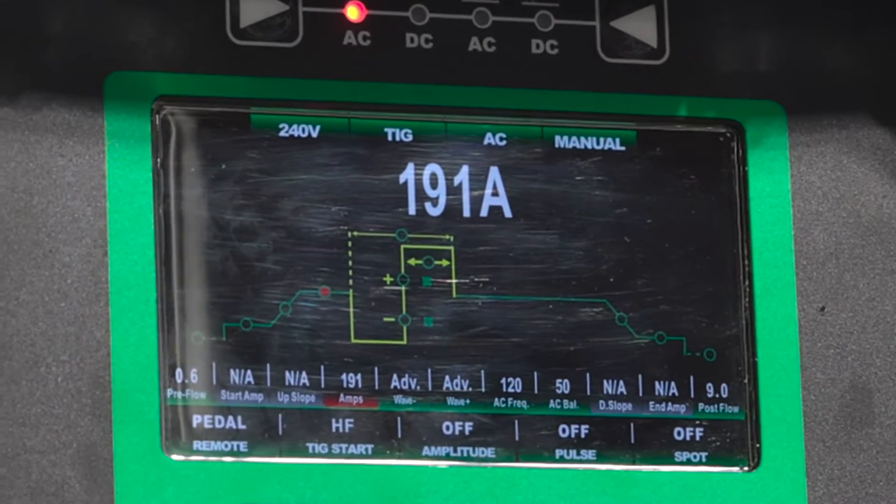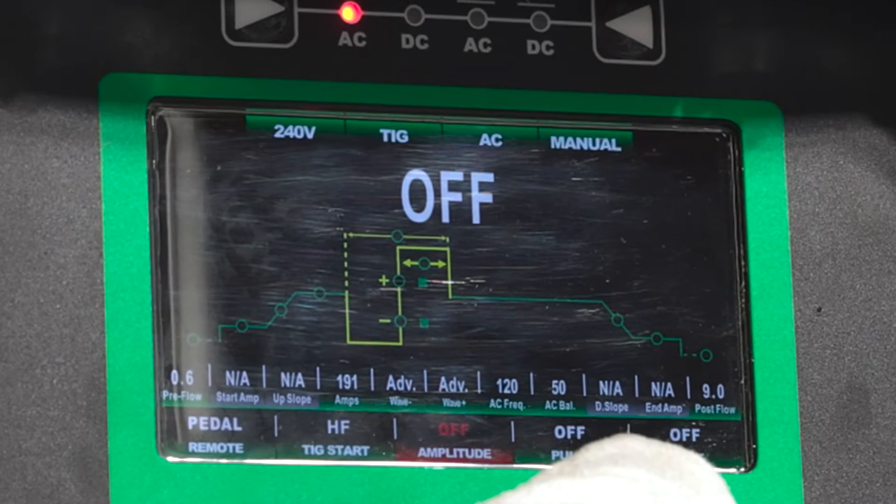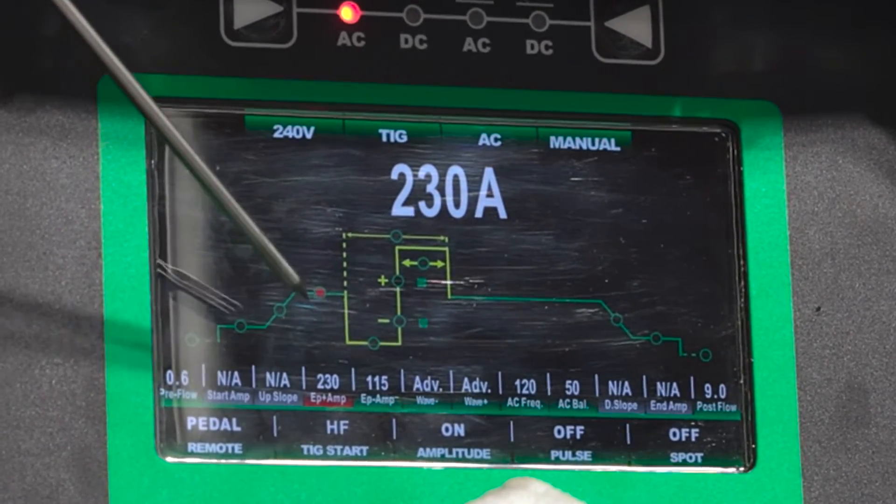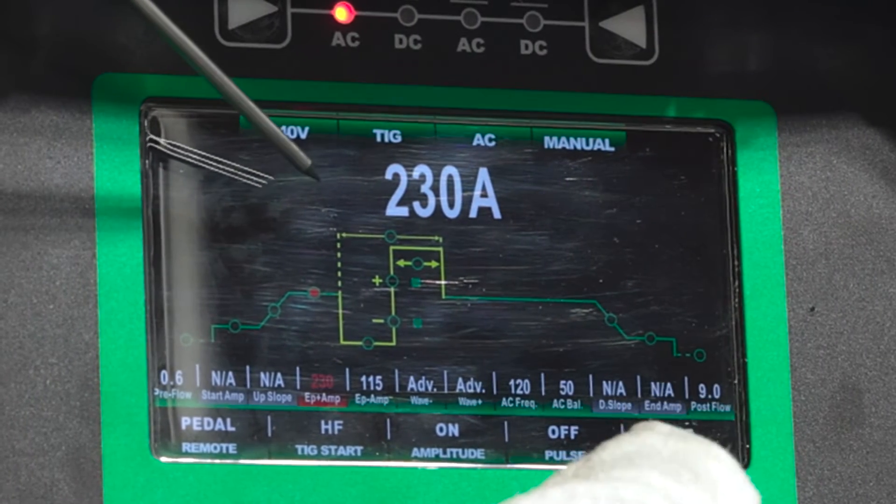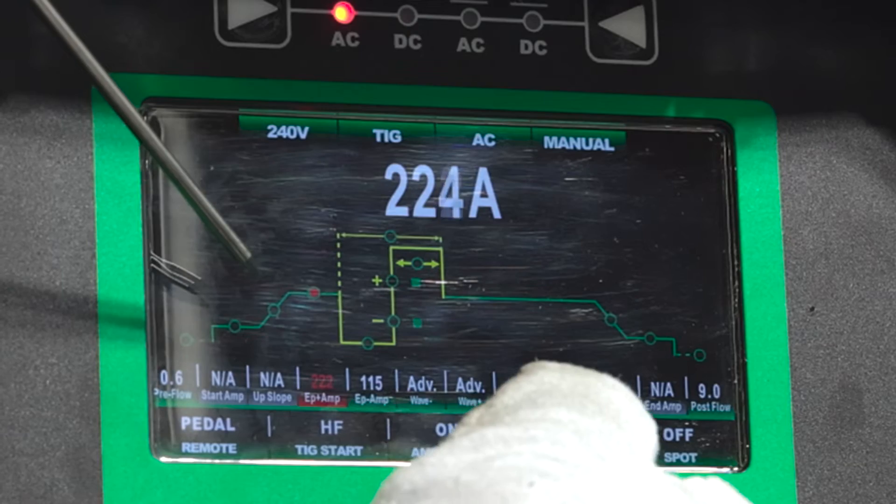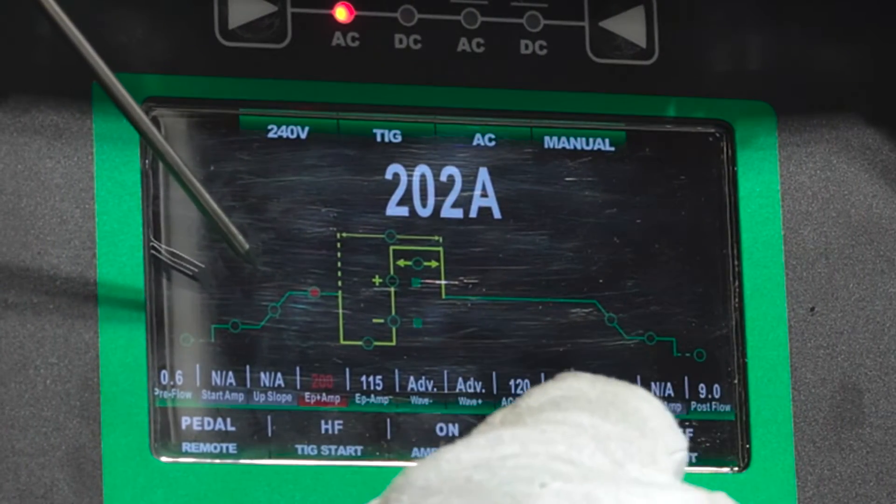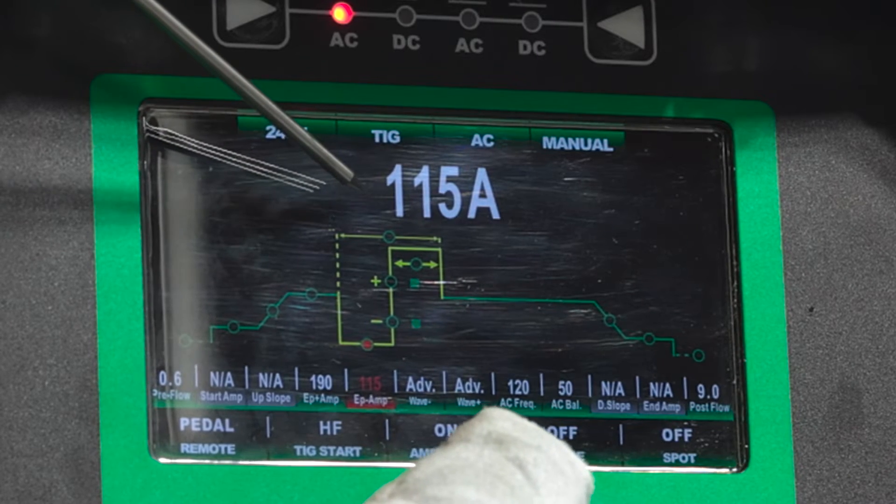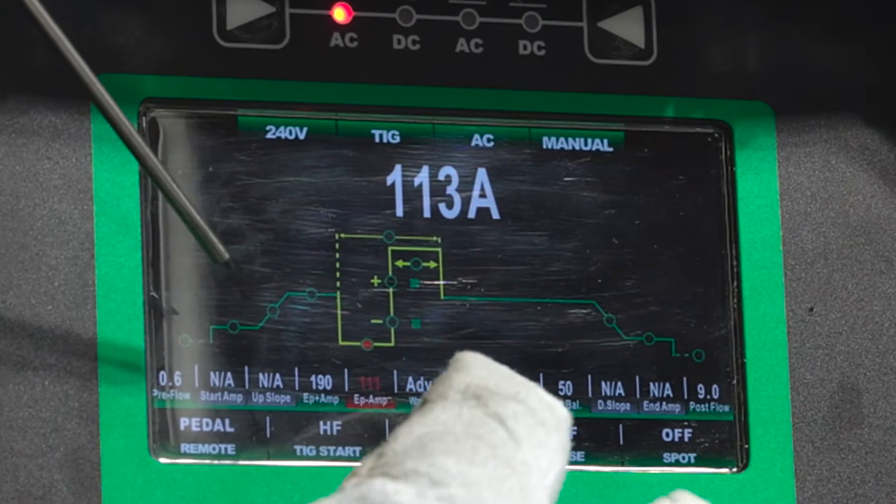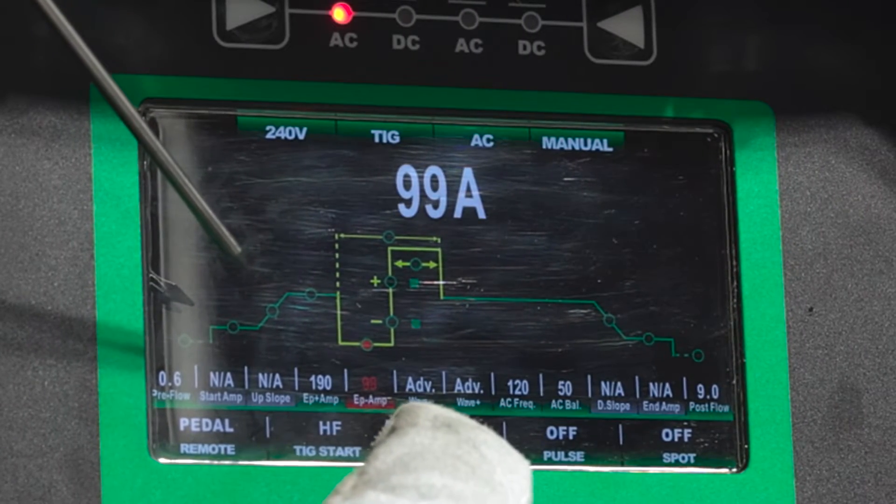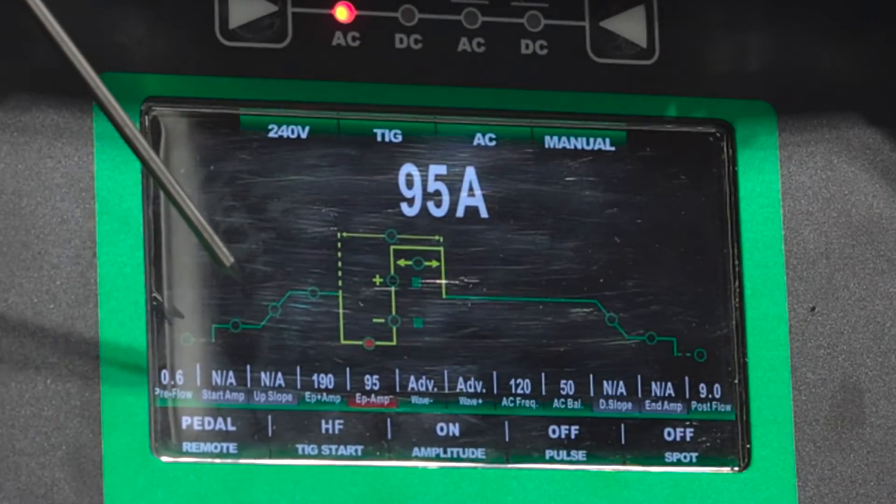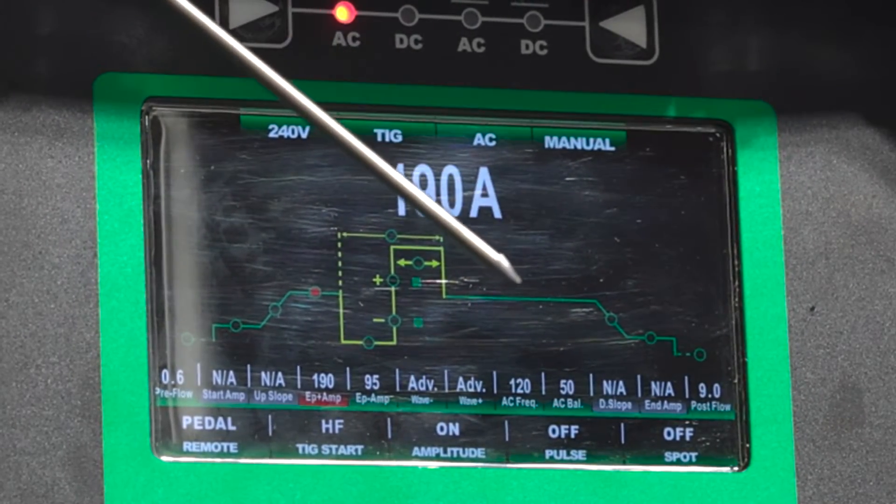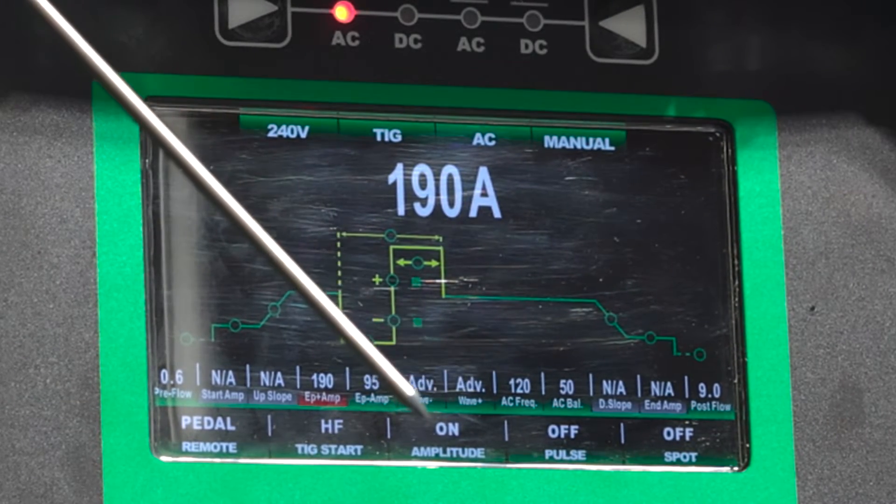So now we just made our balanced EN EP run with 50% balance. Now I'm going to turn my independent amplitude on. We're going to adjust our EP to EN ratio. To stay consistent with our drawing, I'm going to select our EP amplitude and bring it down to 190 amps. Now we're going to select our EN and turn it down to 95 amps, giving us our 2 to 1 ratio. So now we are sending 190 amps up to our tungsten and 95 amps down to our weldment. I'm going to throw in a fresh piece of tungsten so we can compare all three runs at the end. Let's go make another run.